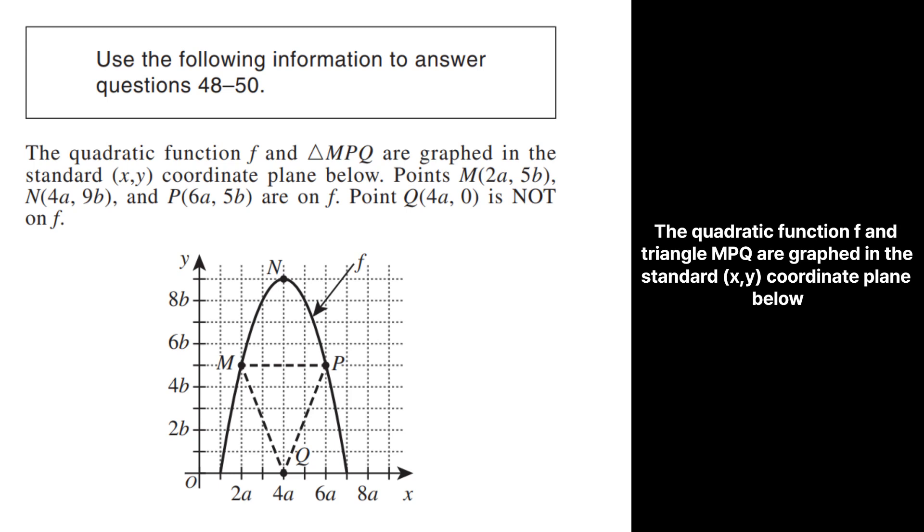The quadratic function f and triangle MPQ are graphed in the standard x, y coordinate plane below. Points M with coordinates (2a, 5b), N with coordinates (4a, 9b), and P with coordinates (6a, 5b) are on f. Point Q with coordinates (4a, 0) is not on f.